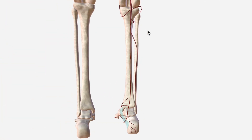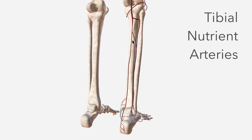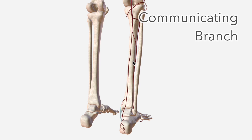The first branch the posterior tibial artery sends off is the fibular artery. We then have small tibial nutrient arteries, which branch off to penetrate the tibia and supply the bone tissue. A bit further down, around the mid-shaft of the tibia, we should see a communicating branch which connects the posterior tibial to the fibular artery, giving us some redundancy if one is blocked off.